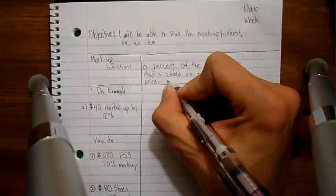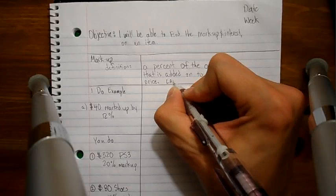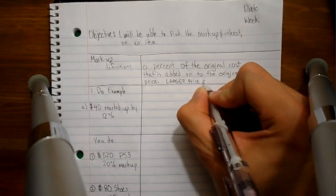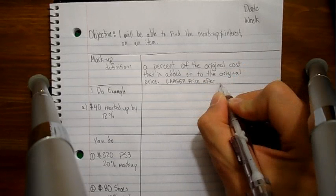That's marking up the amount. That's adding interest to the amount. In all of these cases, what's very important is that the new price or the new amount is larger. It's a larger price after the markup.